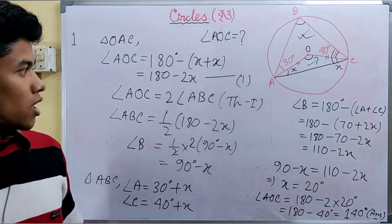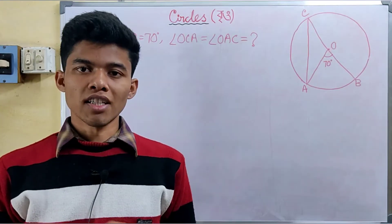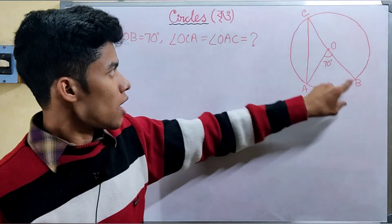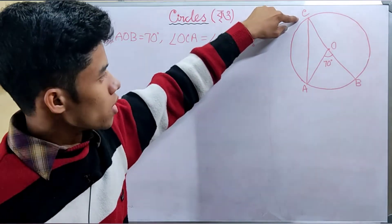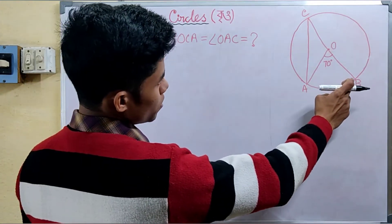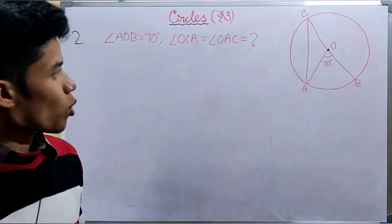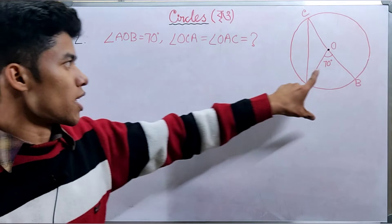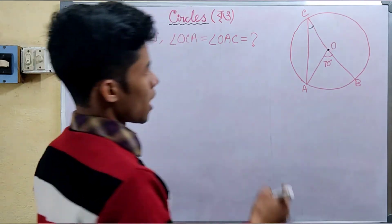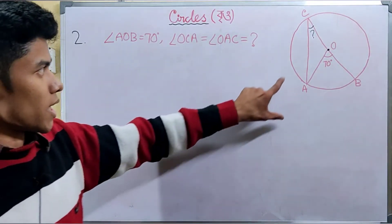AOC equals 140 degrees — that is the answer. Now for the second problem: the circle has center O, BC is the diameter, and angle AOC is given as 70 degrees. We need to find angle OCA. We will apply the first theorem.